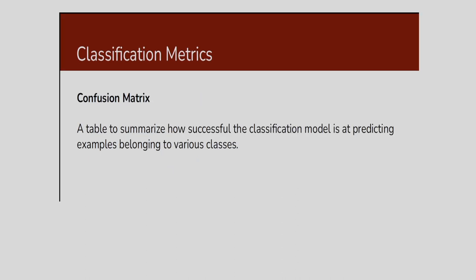What is a confusion matrix? The confusion matrix is nothing but a table to summarize how successfully the classification model can predict examples belonging to various classes. I will be considering C number of classes, and how many times a particular class is recognized correctly, I can determine — and based on this I can determine the confusion matrix.